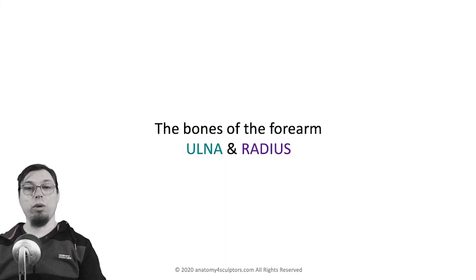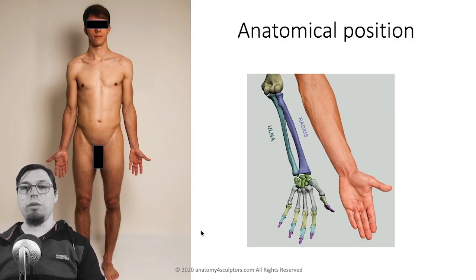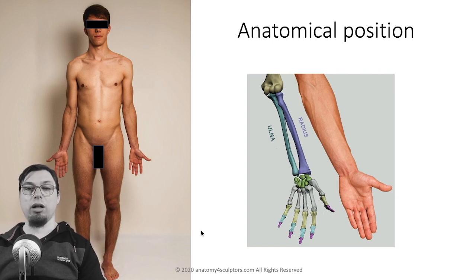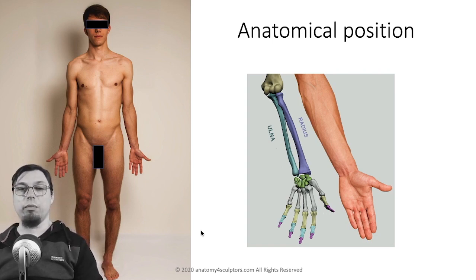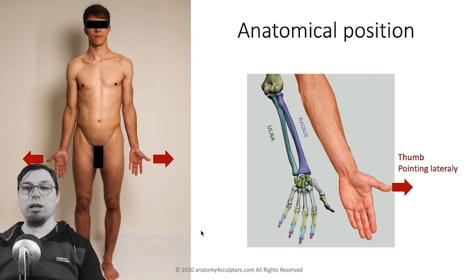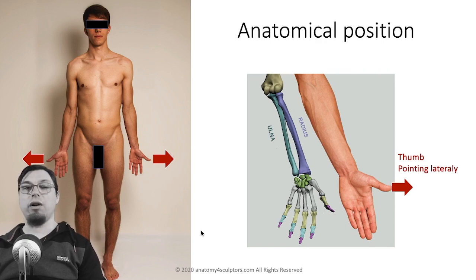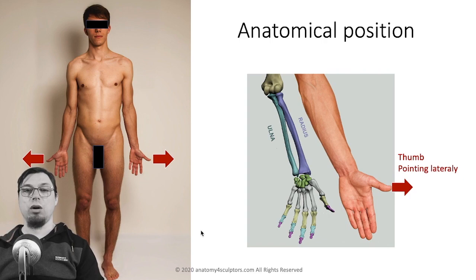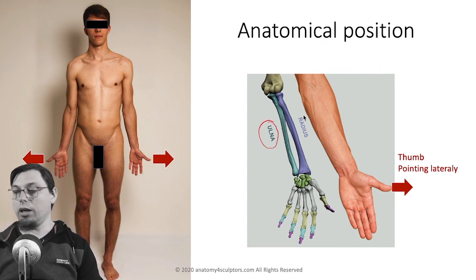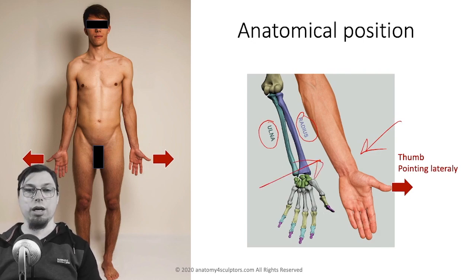Let's jump into the bones of the forearm. There are two bones called the ulna and radius. Before we study them, we need to get clear about orientation. In anatomy, these bones are viewed as parallel bones, and they are parallel only when the body is in anatomical position — thumb pointing laterally and palms facing forward. In this position, the radius is on the thumb side, or the lateral side, and the ulna is on the medial side.